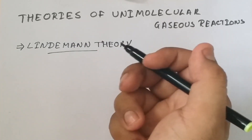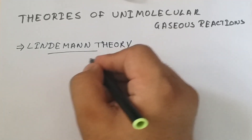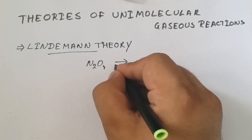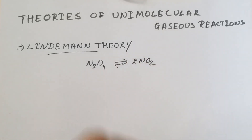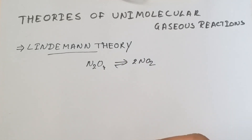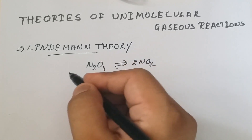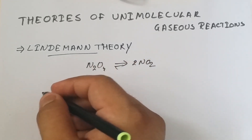Similarly, consider the decomposition of N₂O₄ into 2NO₂ — this is also an example of a unimolecular reaction. Similarly, thermal decomposition reactions, racemization reactions, and cis-trans isomerization reactions are some examples of unimolecular reactions, wherein only a single molecule takes part in the reaction.